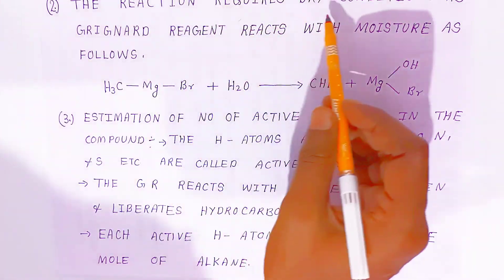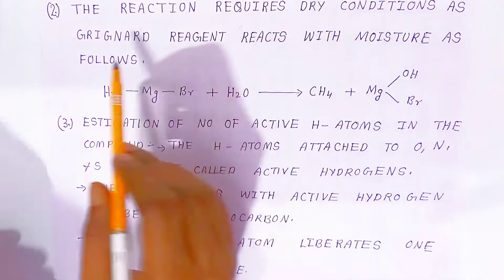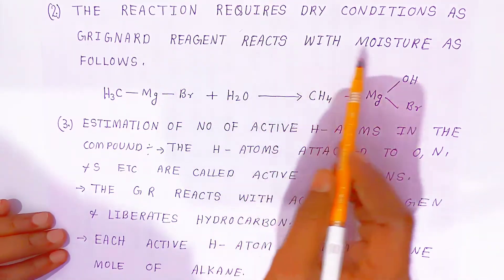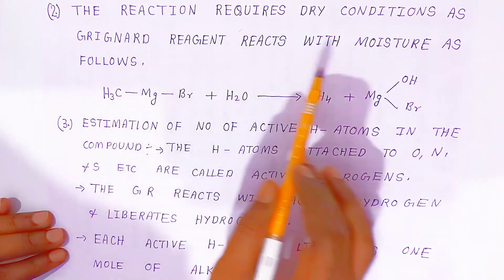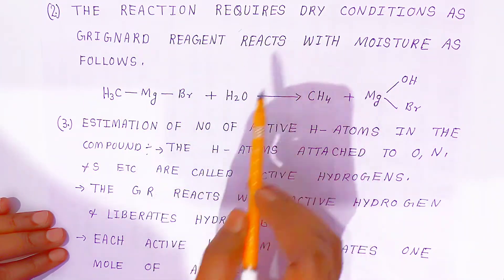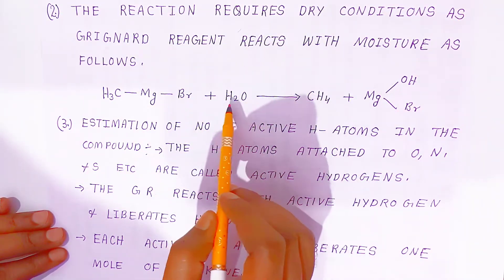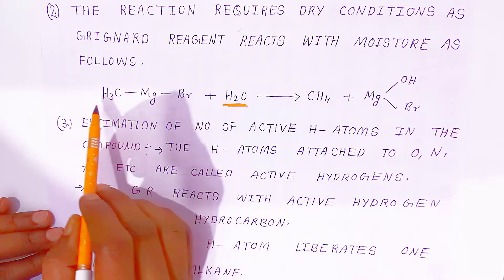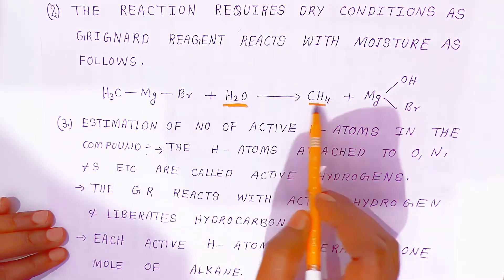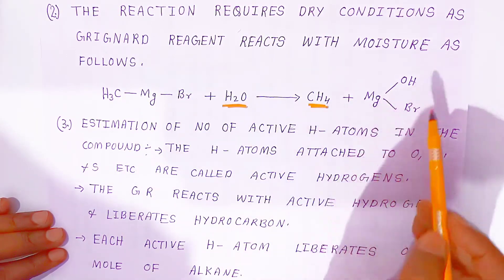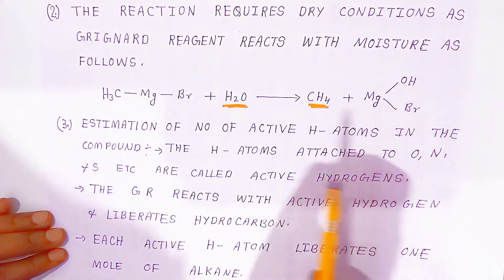The reaction requires dry conditions as Grignard reagents react with moisture. All reactions take place in absence of water. If water is present, methyl magnesium bromide will convert into methane and you get an undesired byproduct.